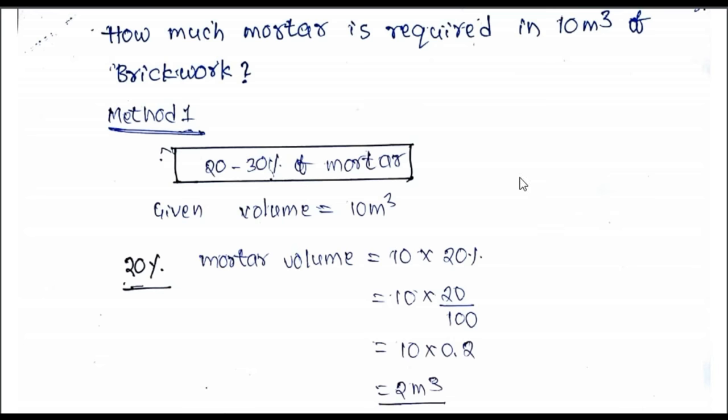Let's see an example: how much mortar is required in 10 cubic meters of brickwork? First we will calculate it by approximate method, then we will calculate by exact method. We take the quantity of mortar as 20 to 30 percent of total brickwork.